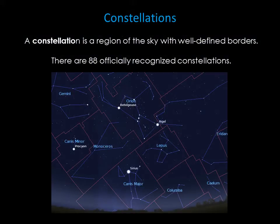A constellation is simply a region of the sky with well-defined borders. Just as every spot of land in the United States is part of some state, every part of the sky and every star belongs to a particular constellation. There are 88 official constellations, chosen in 1928 by members of the International Astronomical Union.